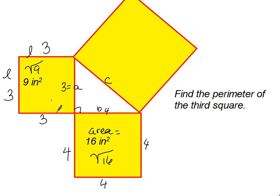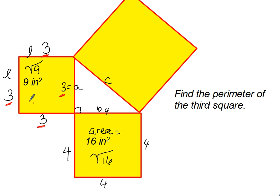Now, if we were to find the perimeter of the first square we would add the 4 sides: 3 plus 3 plus 3 plus 3, because for the perimeter you add all the sides. So the perimeter of this square is 12.